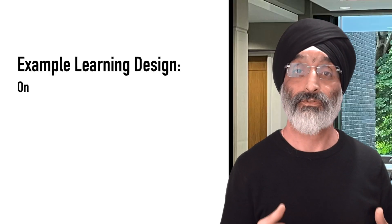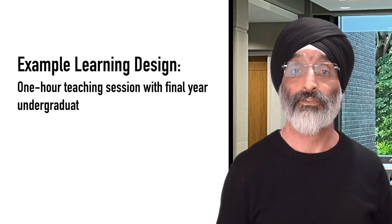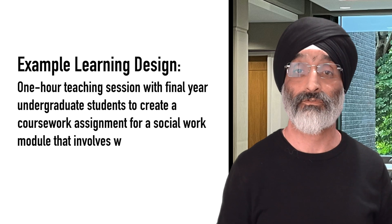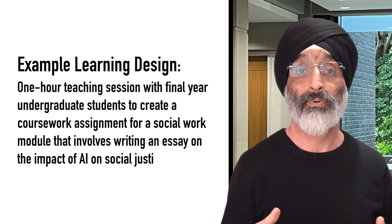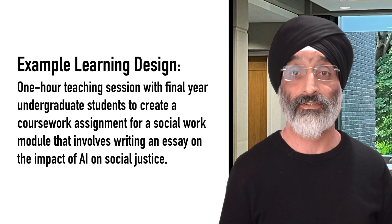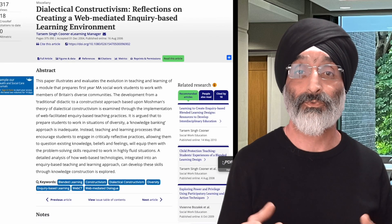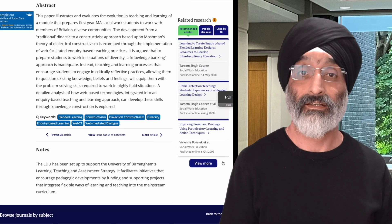In this section of the video, I'm going to illustrate how the PEAR framework can be implemented in practice. In this example learning design, I'm going to use a one hour teaching session with final year undergraduate students to create a coursework assignment for a social work module that involves writing an essay on the impact of AI on social justice. In class, I would create small learning groups of five to six students, as my own research has shown that small group conversations really help with the processes of inquiry, critical thinking and learning.